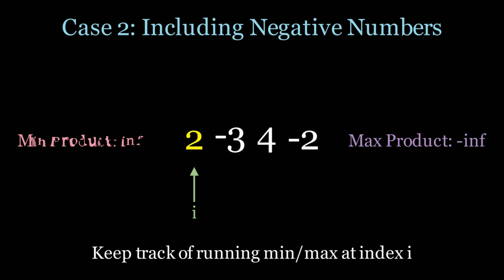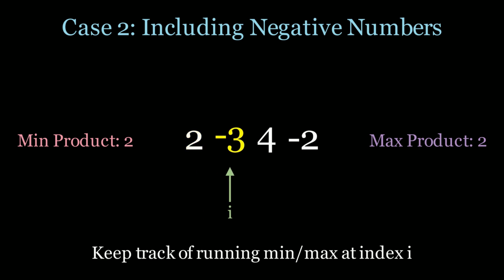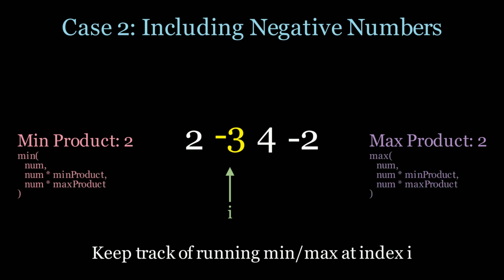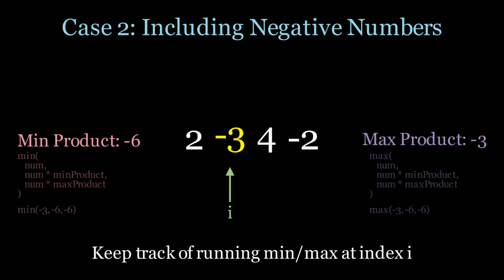Let's go through the first element, which is 2. We take that as both the min and max product since it's the first element, then move on to negative 3. At negative 3, we take the minimum and maximum products between multiple values: the current number, the number times the minimum product, or the number times the maximum product. For the minimum product it's the minimum between negative 3, negative 6, and negative 6 — so we take negative 6, which is 2 times negative 3. For the max product it's the maximum between negative 3, negative 6, and negative 6 — so we take negative 3.